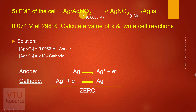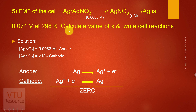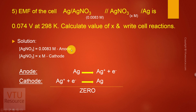Next problem: EMF of the cell Ag | AgNO₃ (0.0083 M) || AgNO₃ (x M) | Ag is 0.074 volts at 298 K. Calculate the value of x and write cell reactions. The EMF is given as 0.074 volts. Anodic concentration is 0.0083 M and cathodic concentration is x molar.